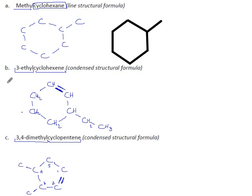They want condensed structural again. This carbon has three bonds used so it can hold one more hydrogen. This one has two bonds used, so it can take two hydrogens. Three bonds used — only one hydrogen there. One bond used — three spaces for hydrogen. Three bonds used here so one hydrogen, and on the tail end another CH3 because it's only used one bond so far. This carbon has three bonds used so it can take one hydrogen.